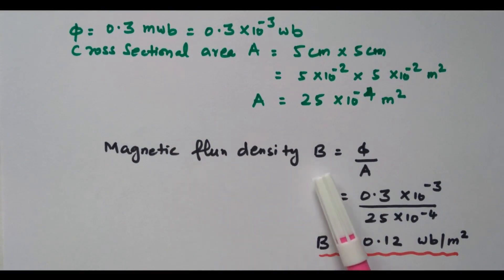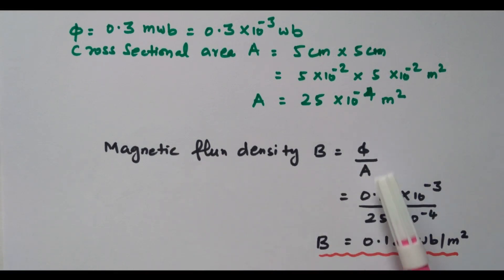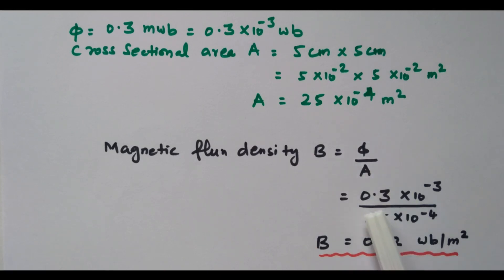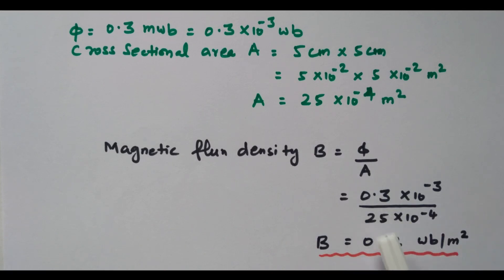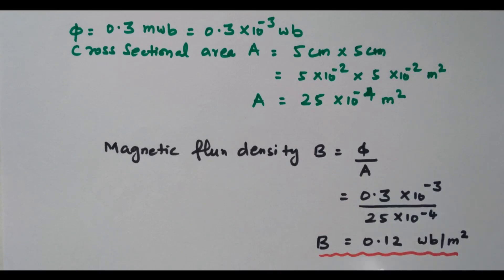Magnetic flux density B equals φ divided by A — that is, flux per unit area. Substituting: φ = 0.3 × 10⁻³ and A = 25 × 10⁻⁴. By simplifying we get B = 0.12 weber per metre square. The unit for magnetic flux density is weber per metre square.